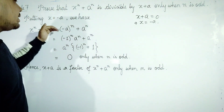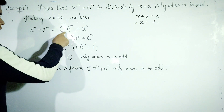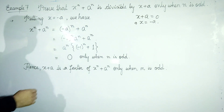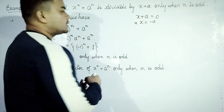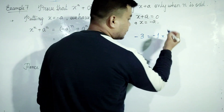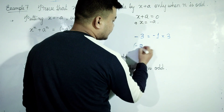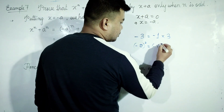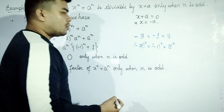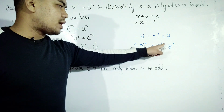Putting x equal to minus a, we get minus a to the power n plus a to the power n. So x is minus a, and we evaluate minus a to the power n plus a to the power n, which gives minus a to the power n plus a to the power n.